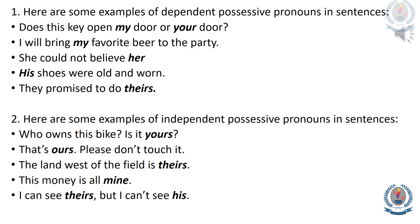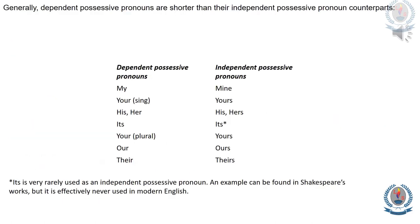This money is all mine. I can see theirs, but I can't see his. Generally, dependent possessive pronouns are shorter than their independent possessive pronoun counterparts. Look at the following table: my/mine, your/yours, his/his, her/hers, its/its, your/yours, our/ours, their/theirs. Note that 'it' is very rarely used as an independent possessive pronoun — an example can be found in Shakespeare's works, but it is effectively never used in modern English.